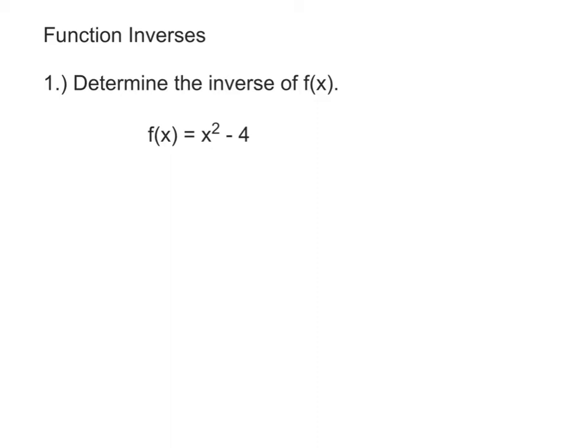I'm just going to start by replacing f of x with y, because I know that those two are equivalent. And then in order to actually start talking about the inverse, this is where I kind of create my magic, and I switch x and y. So now instead of y equals x squared minus 4, I have x equals y squared minus 4. It's at that step that now I'm talking about the inverse.